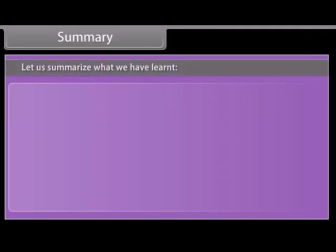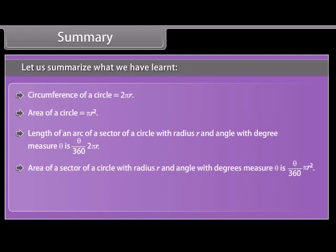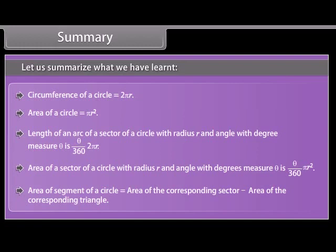Summary: Circumference of a circle equals 2πr. Area of a circle equals πr². Length of an arc of a sector with radius r and angle θ (in degrees) equals θ/360 × 2πr. Area of a sector with radius r and angle θ (in degrees) equals θ/360 × πr². Area of a segment of a circle equals the area of the corresponding sector minus the area of the corresponding triangle.